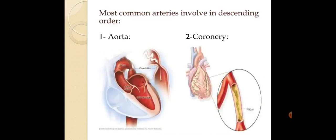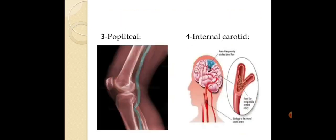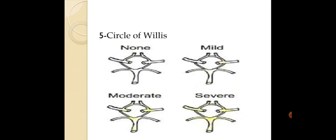The most commonly involved arteries are: first, the aorta; second, the coronary artery, which is especially dangerous to the heart since it supplies oxygen and nutrition to the heart — in the case of the coronary artery, heart attack and myocardial infarction can occur; third, the popliteal artery, where involvement can cause gangrene; fourth, the internal carotid; and fifth, the circle of Willis, which is located on the inferior side of the brain.